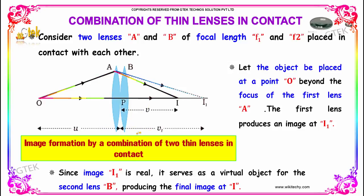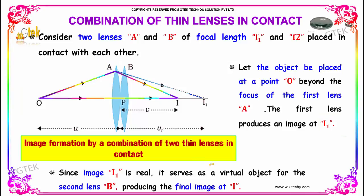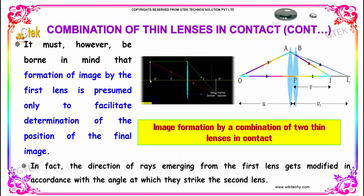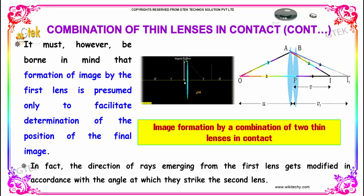Let the object be placed at a point O, beyond the focus of the first lens A. The first lens produces an image at I1. Since the image I1 is real, it serves as a virtual object for the second lens B, producing the final image at I. The formation of image by the first lens is pre-assumed only to facilitate and determine the position of the final image.